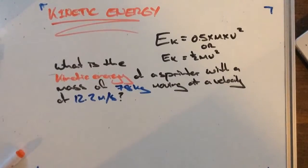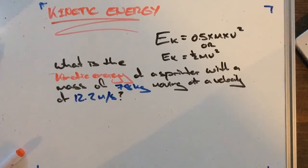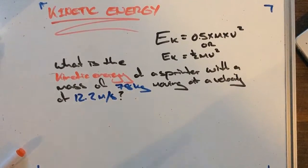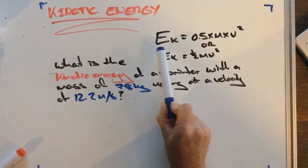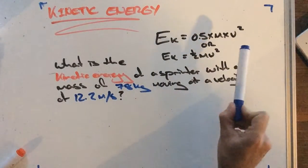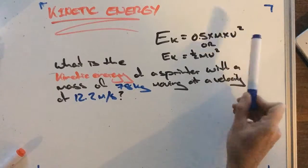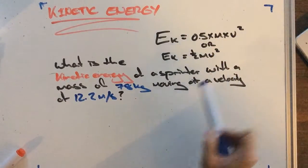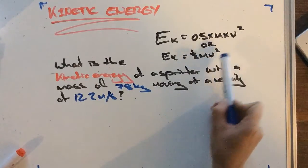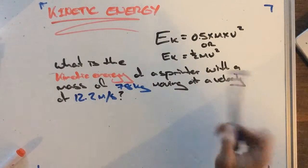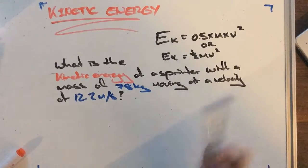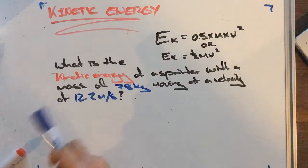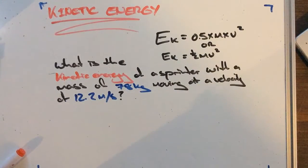Kia ora team. So what we're going to work out here is kinetic energy. Our formula for kinetic energy is: kinetic energy is equal to 0.5 times mass times velocity squared. You might also see this written as half mv squared — it means the same thing. So if we get a question that states: what is the kinetic energy of a sprinter with a mass of 78 kg moving at a velocity of 12.2 meters per second?